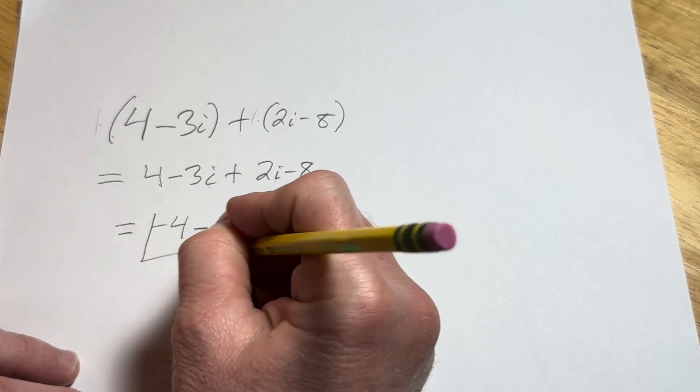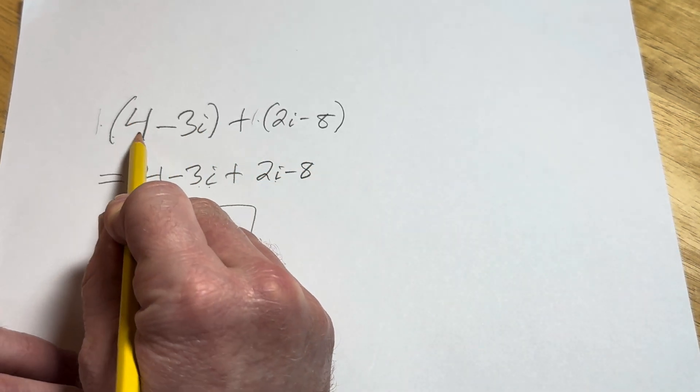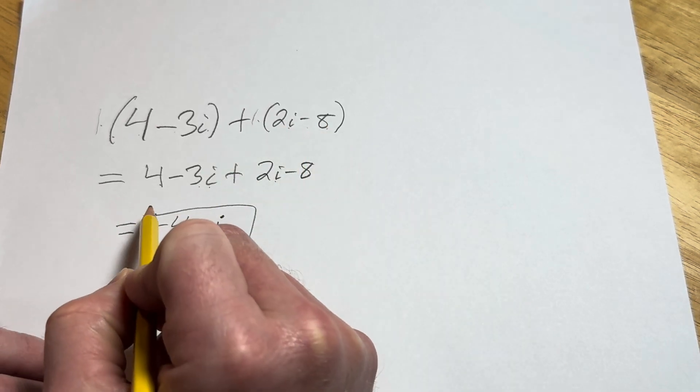And that would be the final answer in this problem, negative 4 minus i. That would be the sum of 4 minus 3i plus 2i minus 8. I hope it's been helpful.